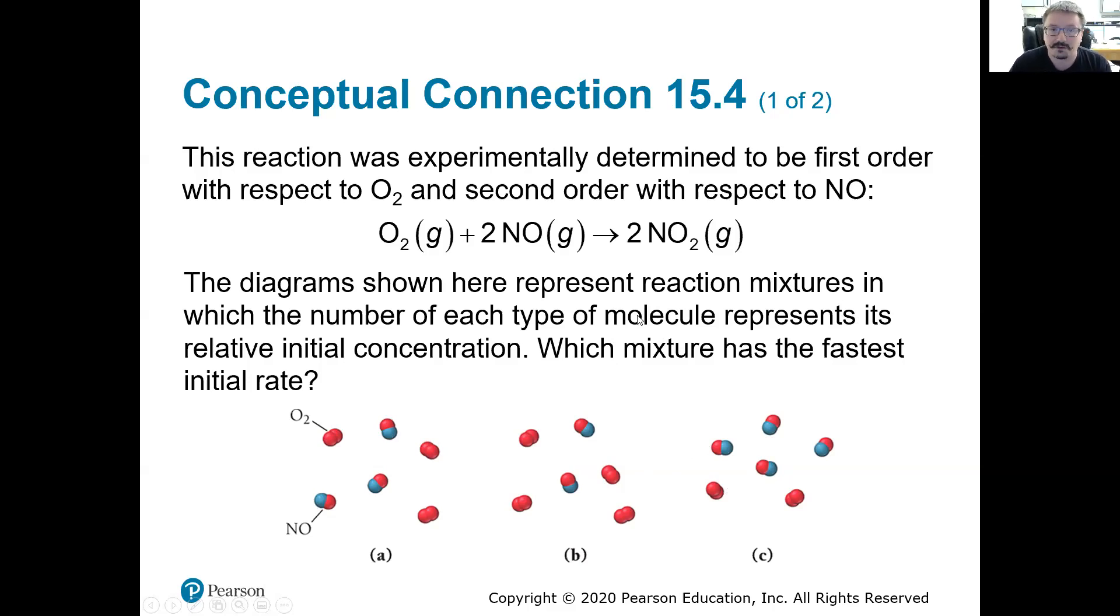So if it's second order with respect to NO, changing the concentration of NO is going to have a much greater effect on the rate than changing the concentration of O2. So which one of these do I think would have the fastest initial rate? That should be C. Because we could even plug that in if we just take the raw numbers, right? For the O2, I have 2 raised to the first power is 2. And for the NO, I have 4 raised to the second power is 16. So 2 times 16 is much different than say 4 times 4. That would actually be identical-ish. But I think really what they're focusing in on here is that the one with the greater concentration of NO, because NO is going to have a much greater effect on the reaction rate.